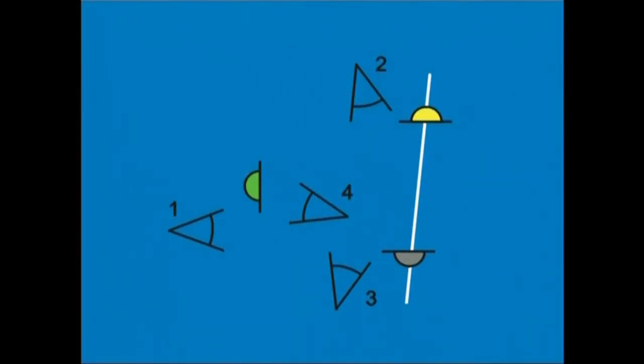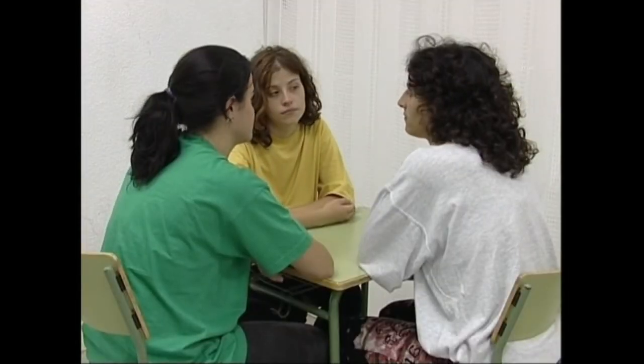Eskenaren muntaketan orden honi jarraituko diogu: bat, lau, bat, bi, iru, bat, bat, lau, bi, iru, lau, bat.